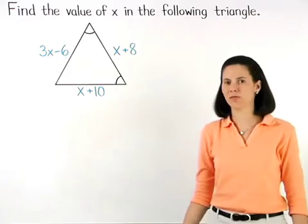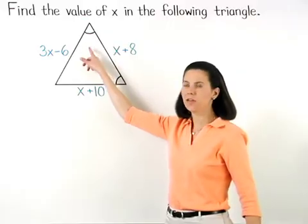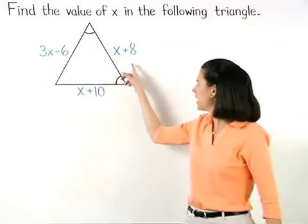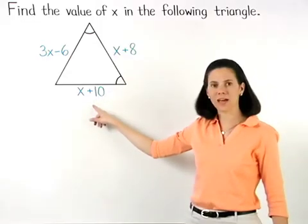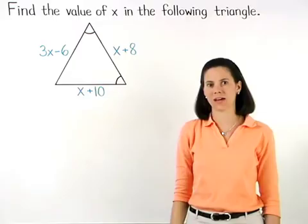So let's say we're given a triangle with two congruent angles, sides with lengths of 3x minus 6, x plus 8, and x plus 10, and we're asked to find the value of x.